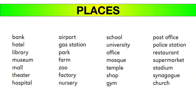Next comes the category of places. Places such as bank, hotel, zoo, factory, gym, temple, stadium, church, and school are all common nouns. These are general place names, not specific ones, so they are all common nouns.